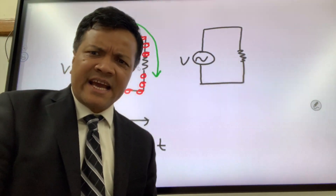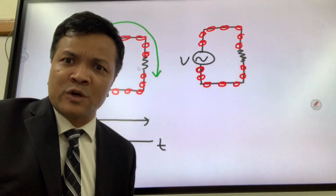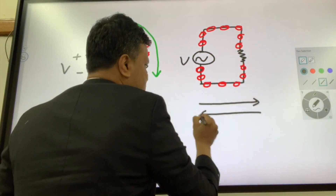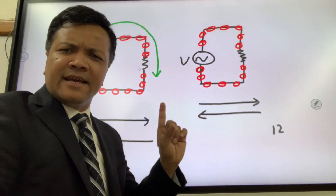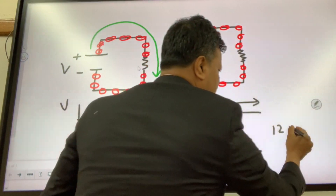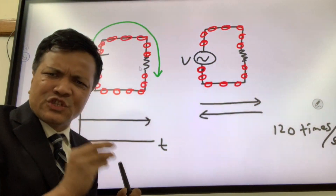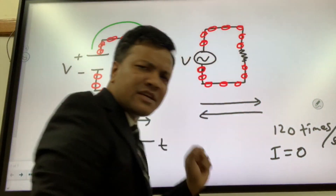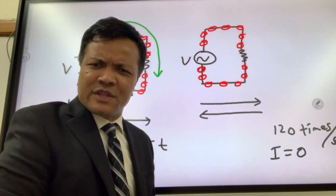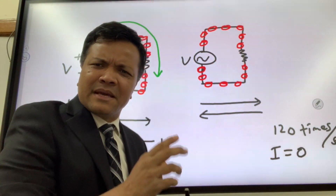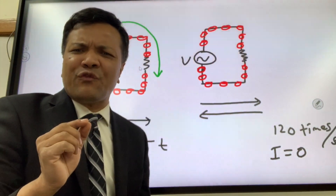We're going to invade the mind of Tesla — Nikola Tesla — and understand how he invented what we call AC current. In AC current, electrons move backward and forward — forward and backward — 100 times per second in India, and 120 times per second in the United States. That means the current goes to zero in the bulb 120 times per second. That's why you see flickering. The filament in the light bulb slows down, goes to zero, and becomes bright again. It happens so fast that you don't see it.